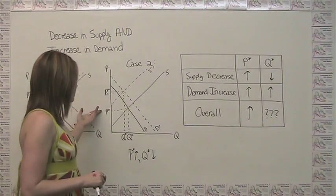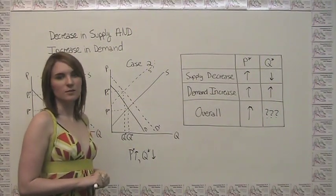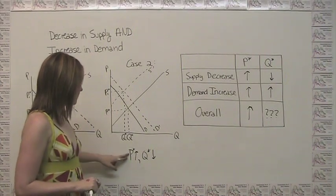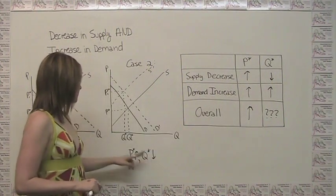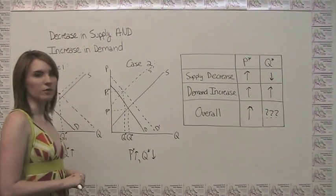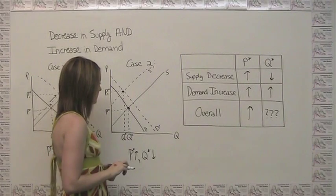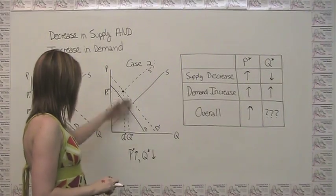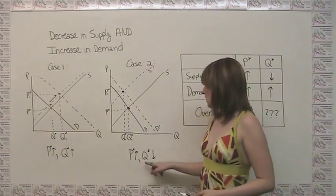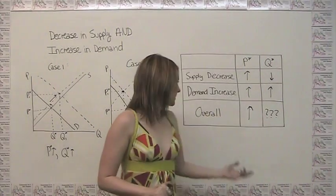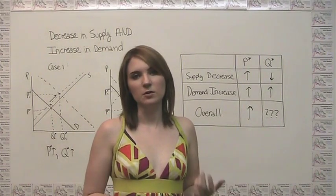On the other hand, when we have a large decrease in supply and a small increase in demand, we still get an increase in price — as we said we always would. But now we see a decrease in equilibrium quantity, going from the original equilibrium to a new lower one. So we have two cases: one where equilibrium quantity increases and one where it decreases. This is why we say we don't know which effect will dominate and we need more information to determine that.